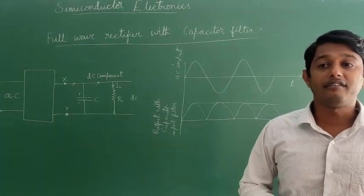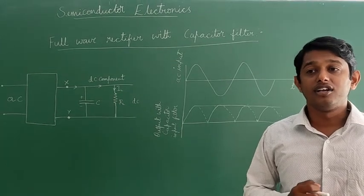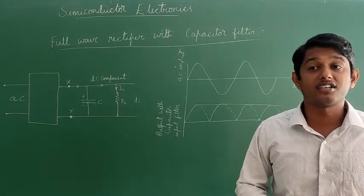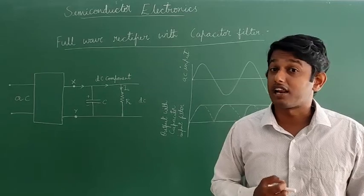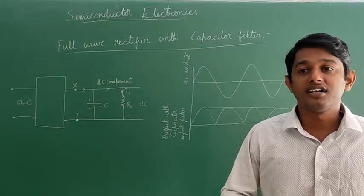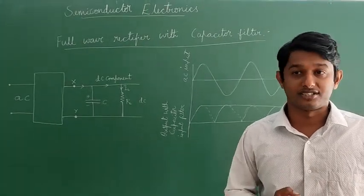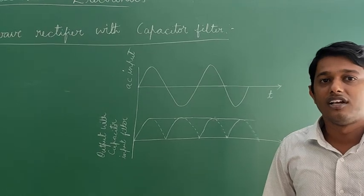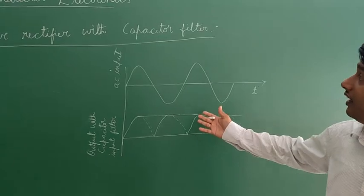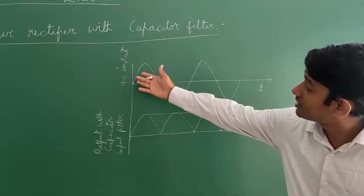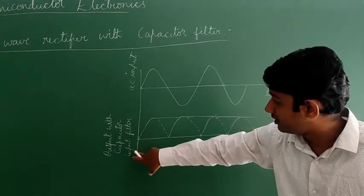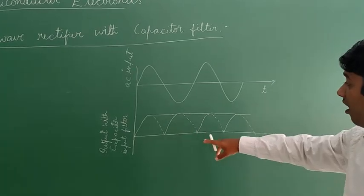To make the time constant large, the value of C should be large. This is the graphical representation of the capacitor filter. This is the AC input and this is the output with the capacitor filter.